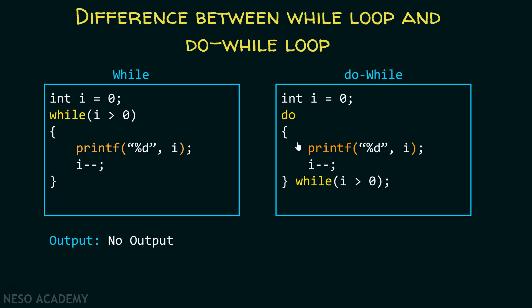According to the do while loop, we first evaluate the body of the loop — that is, we simply print the value 0 and decrement the value — and then after that we check the condition: is i greater than 0 or not? As minus 1 is not greater than 0, we come out of this loop and the output is 0.